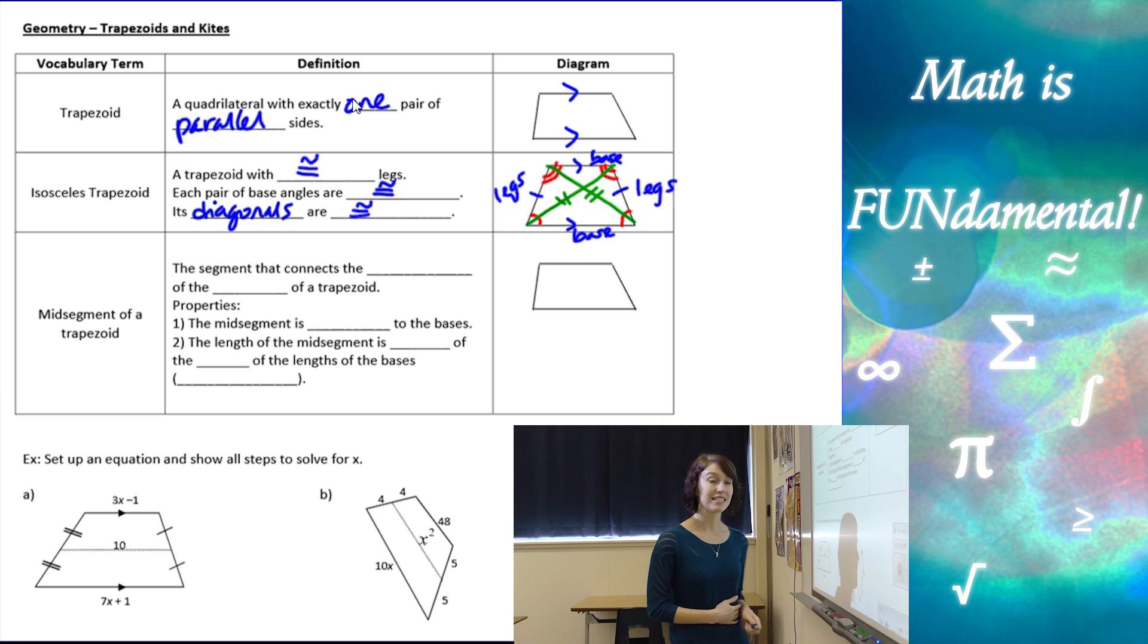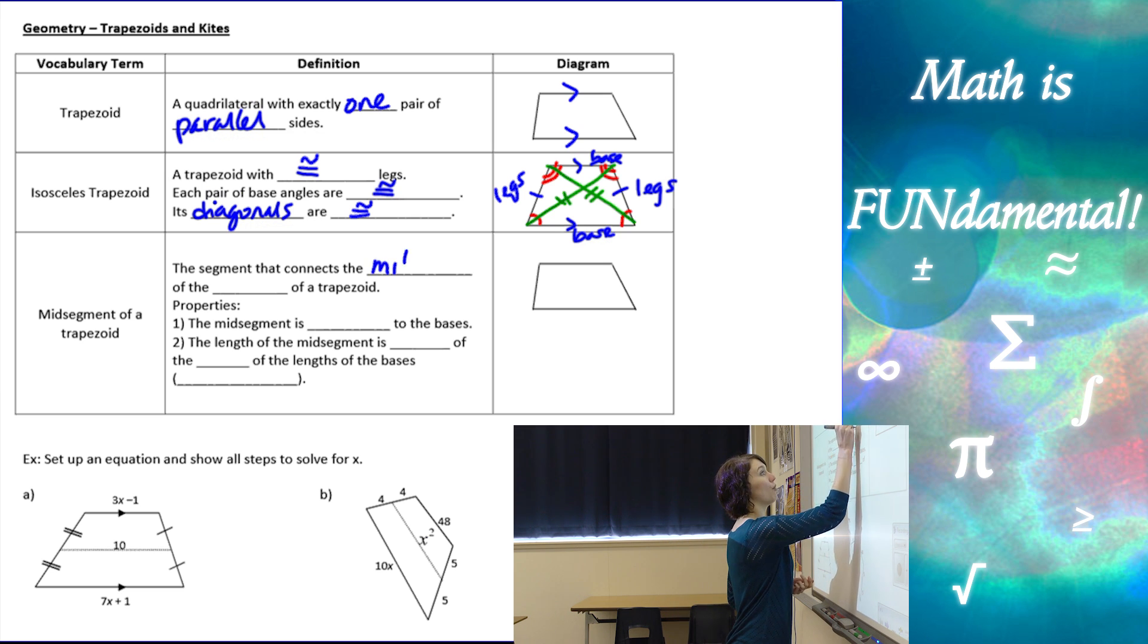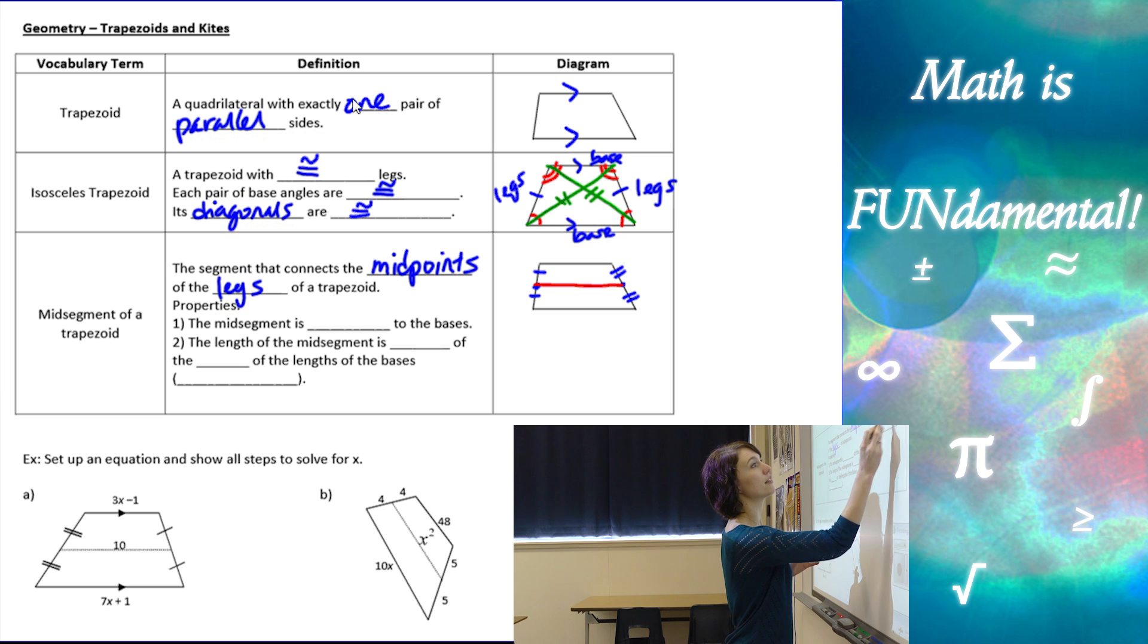Next we have mid-segment of a trapezoid, which is the segment that connects the midpoints of the legs of a trapezoid. So here, if I have the midpoint of this leg and the midpoint of this leg, then our mid-segment is going to be the segment that connects those two midpoints.